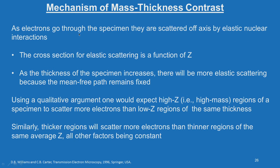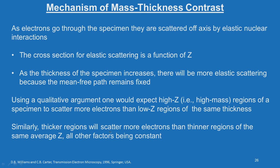As electrons go through the specimen they are scattered off-axis by elastic nuclear interactions. The cross section for elastic scattering is a function of Z, the atomic number. As the thickness of the specimen increases there will be more elastic scattering because the mean free path remains fixed. Using a qualitative argument, one would expect high Z — high mass — regions of a specimen to scatter more electrons than low Z regions of the same thickness. Similarly, a thicker region will scatter more electrons than thinner regions of the same average Z, all other factors being constant.